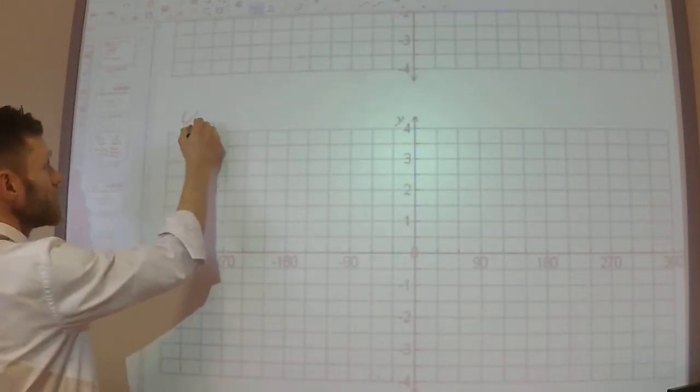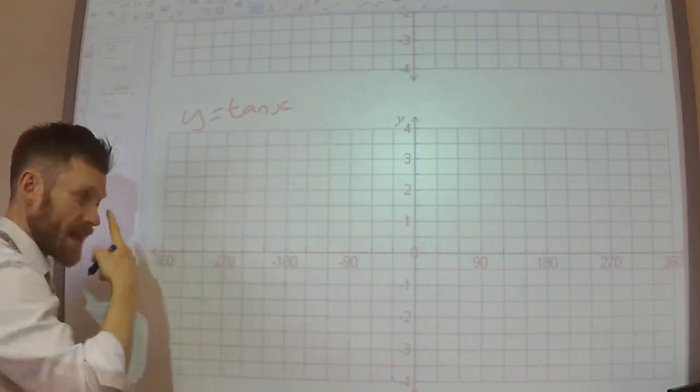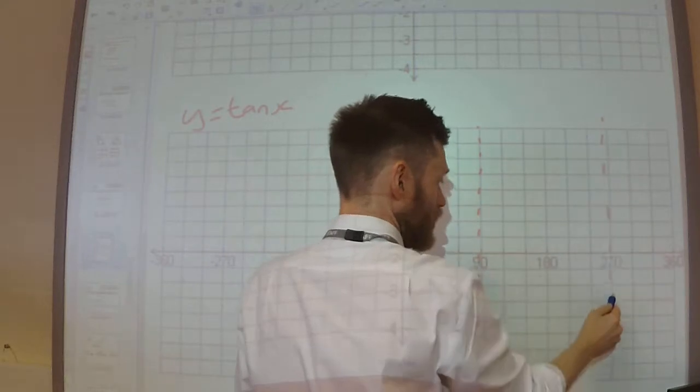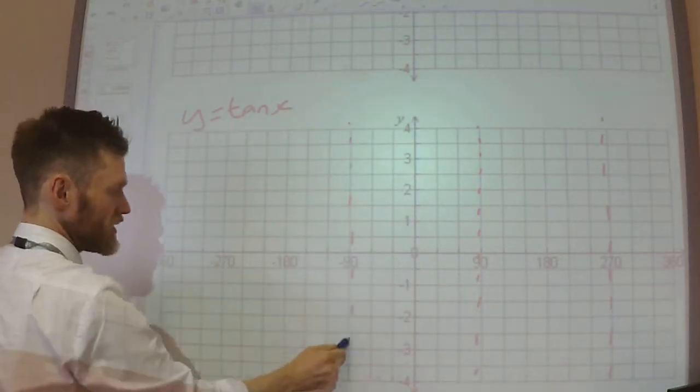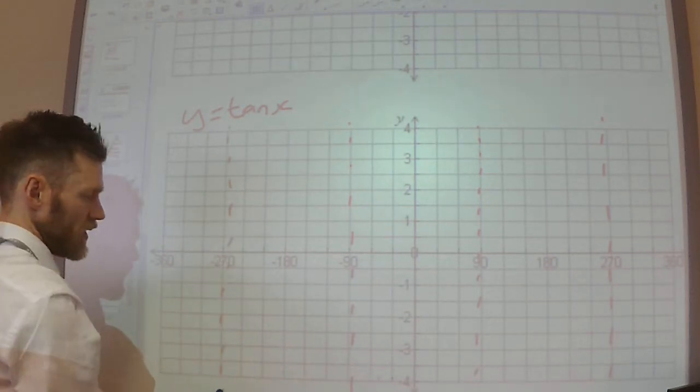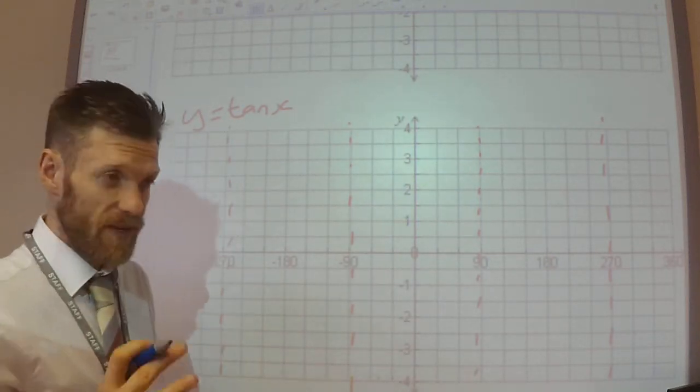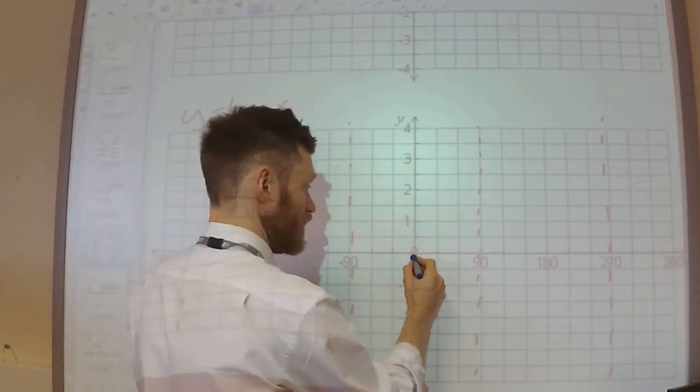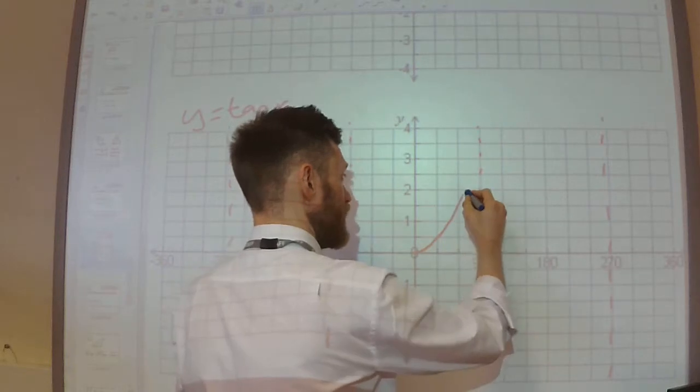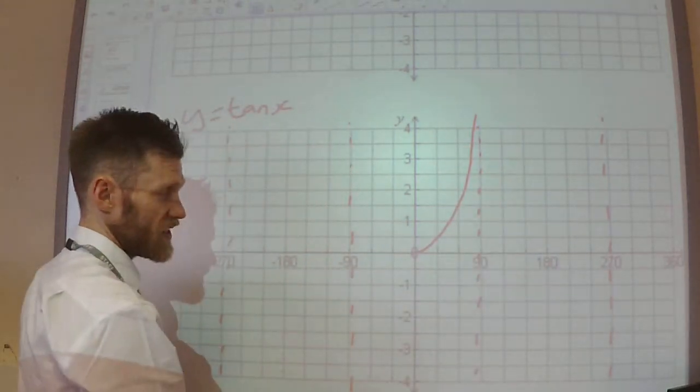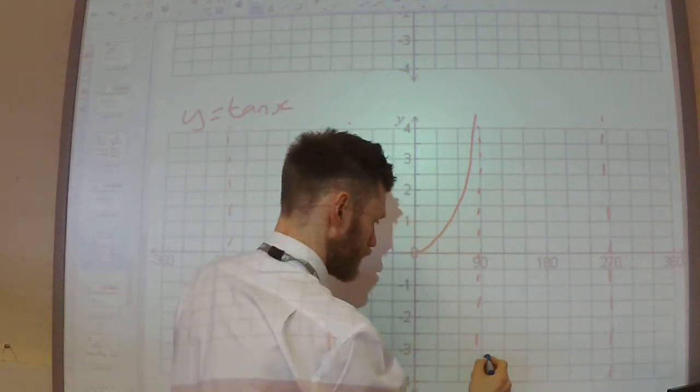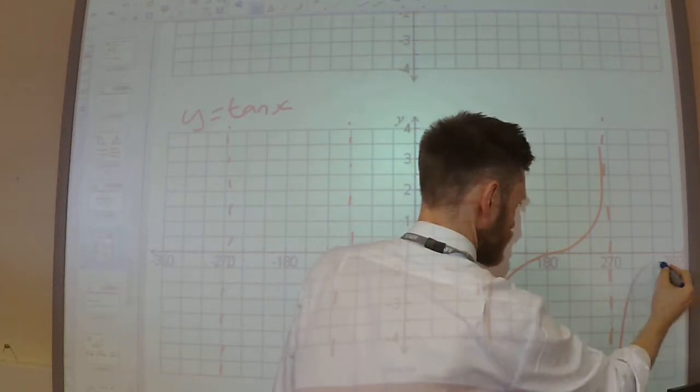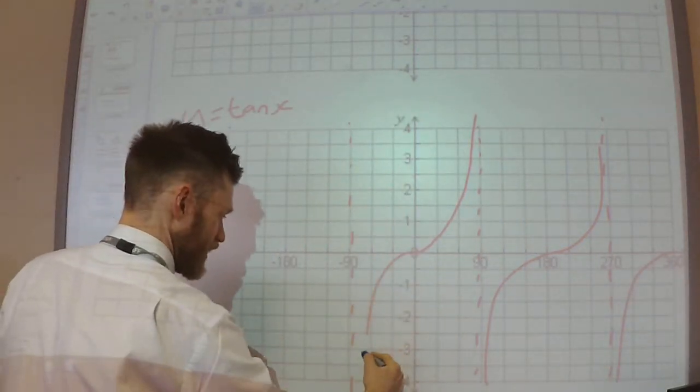Finally, the tan graph. The tan graph has asymptotes at 90, 270, minus 90, minus 270. Again, when you're studying the A-level, you'll see why it has these asymptotes. And we know the graph will go up and get closer and closer to these asymptotes, but never actually touch it. So this is what your tan graph should look like.